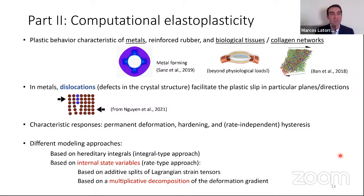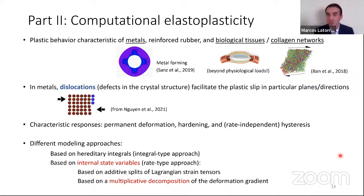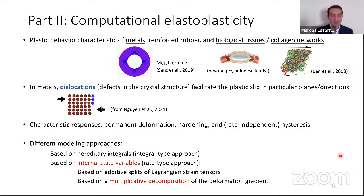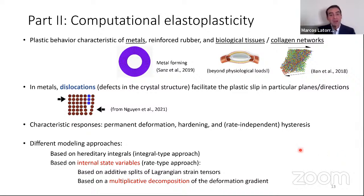Elastoplastic behavior is mostly characteristic of metals, but also reinforces biological tissues — importantly, way beyond the physiological loads — and collagen networks. It can be explained by the presence of dislocations, which are defects in the crystal structure that facilitate plastic slip in particular planes. Characteristic response includes permanent plastic deformation, hardening, and rate-independent hysteresis. As before, I will review a few formulations, evolution equations, and how we can extend or try to improve them.